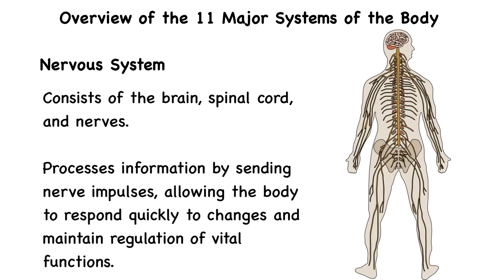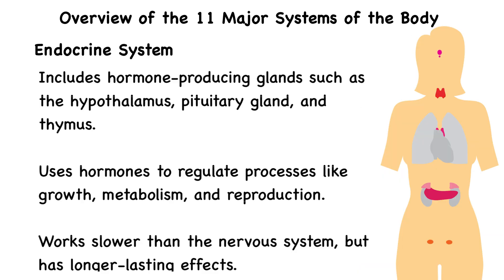Then there's the nervous system. This system consists of the brain, spinal cord, and nerves. It processes information by sending nerve impulses, allowing the body to respond quickly to changes and maintain regulation of vital functions. The endocrine system includes hormone-producing glands such as the hypothalamus, pituitary gland, and thymus, to name a few. It uses hormones to regulate processes like growth, metabolism, and reproduction. It works slower than the nervous system but has longer lasting effects.